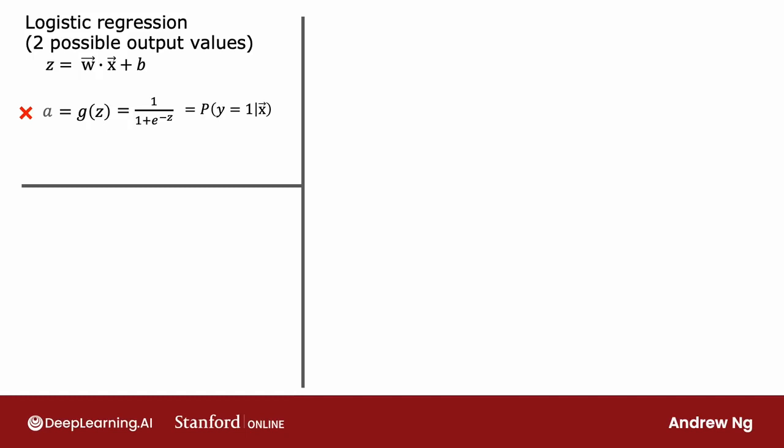Quick quiz question: if the probability of y equals 1 is 0.71, then what is the probability that y is equal to 0? The chance of y being equal to 1 and the chance of y being equal to 0 have to add up to 1. So if there's a 71% chance of it being 1, there has to be a 29%, or 0.29, chance of it being equal to 0.